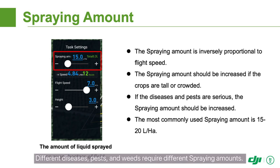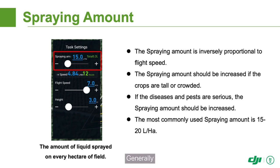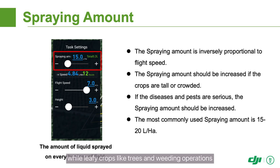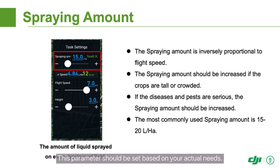Different diseases, pests, and weeds require different spraying amounts. Generally, short crops and preventative operations require low spraying amounts, while leafy crops like trees and weeding operations require higher spraying amounts. This parameter should be set based on your actual needs.